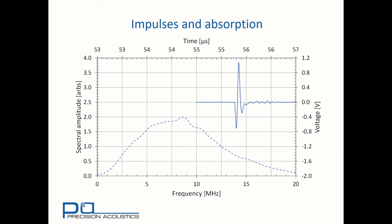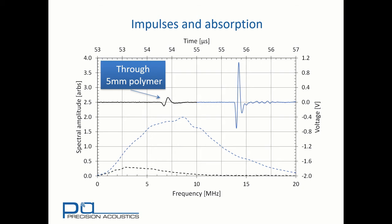However, if we introduce just 5 millimeters of polymer sample in between the transducer that's radiating and the hydrophone that's receiving, we find a very much smaller signal, very different duration, and very much changed bandwidth. In this case, with a center frequency close to 4 megahertz.